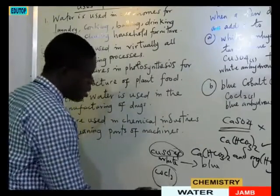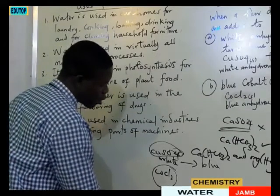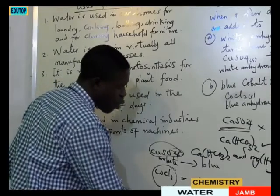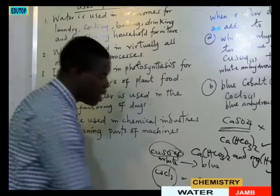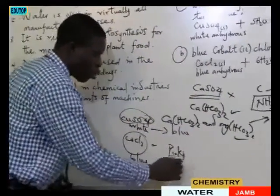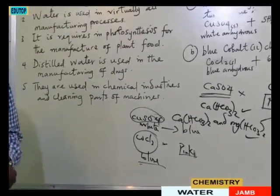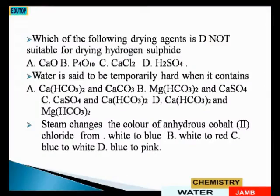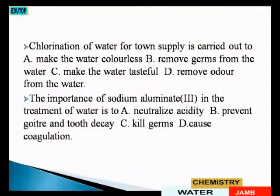In the case of cobalt chloride, it is blue in color, but as soon as water is introduced, it becomes pink. So since the question made mention of cobalt chloride, we are looking for the color change from blue to pink. Option A is white to blue — that's copper sulfate. Option B is white to red. Option C is blue to white. Option D is blue to pink, and that is what we are looking for. The answer is option D.